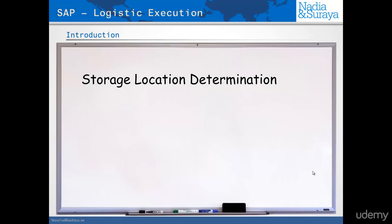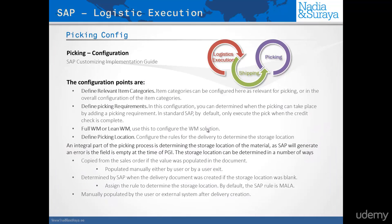The determination of the storage location, either in the sales order or the delivery, is quite important to the order-to-cash and supply chain process in general. This is because the storage location determines where we should reduce the stock when we do the PGI. If the field is empty when we do the PGI, an error will be created. Also, the storage location is part of the determination for the WM warehouse, so you could have different storage locations that could select different WM warehouses, or even not select a WM warehouse at all.